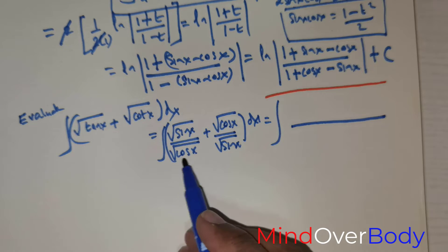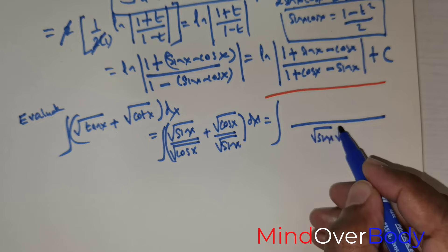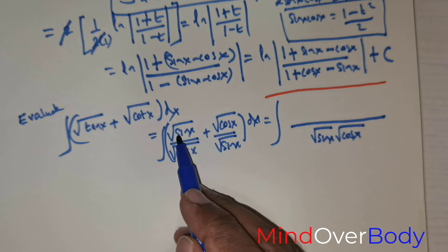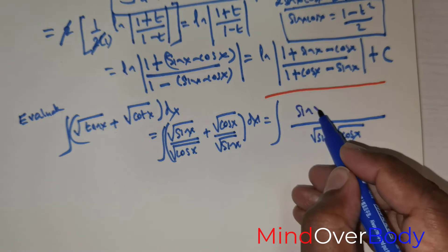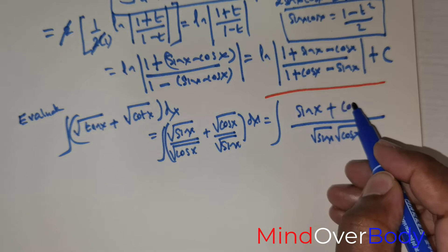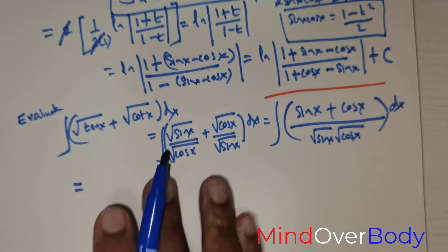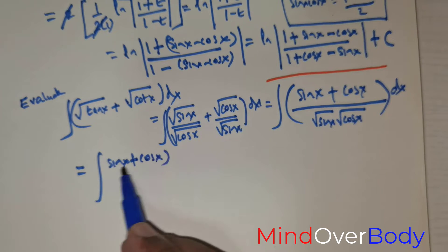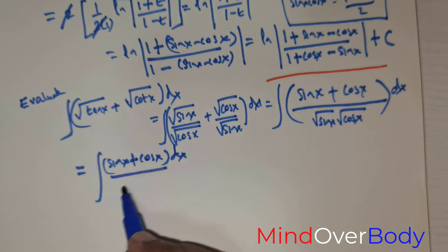Taking the LCM, which is √(sin x)·√(cos x): the √(cos x) terms cancel giving √(sin x)·√(sin x) = sin x, and similarly √(cos x)·√(cos x) = cos x. So the integral becomes the integral of (sin x + cos x) dx over √(sin x · cos x).